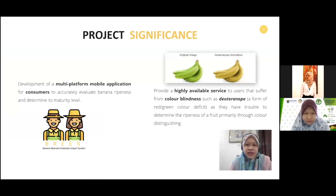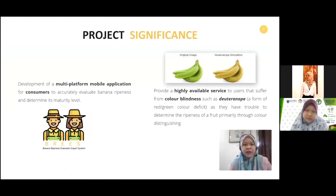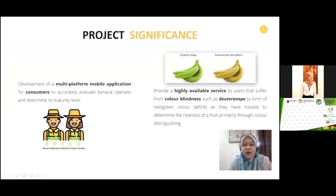The significance of the project is the development of a multi-platform mobile application for consumers to accurately evaluate banana ripeness and determine its maturity level. We also provide high availability service to users who suffer from color blindness, meaning this mobile app is useful for those who have problems with color blindness. As you can see from the example, this is the original image versus how people with color blindness see it — they have difficulty determining ripeness primarily through color distinguishing.